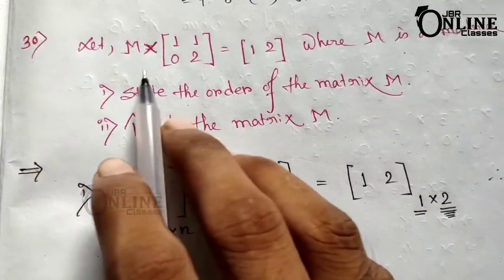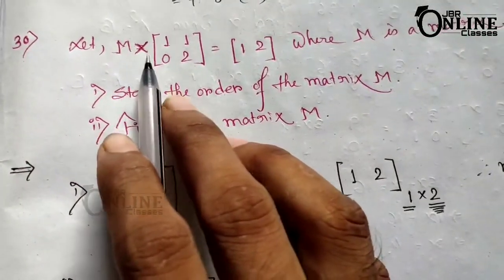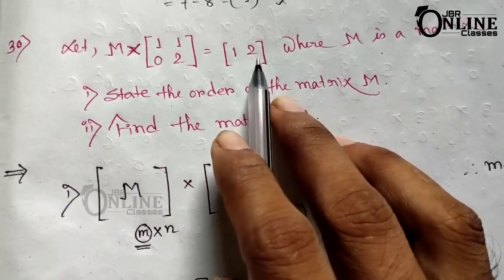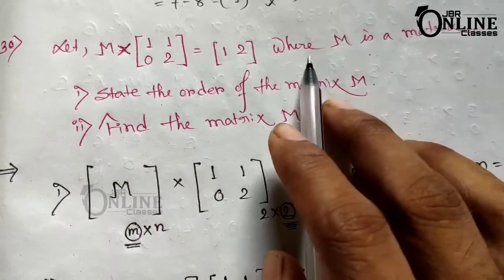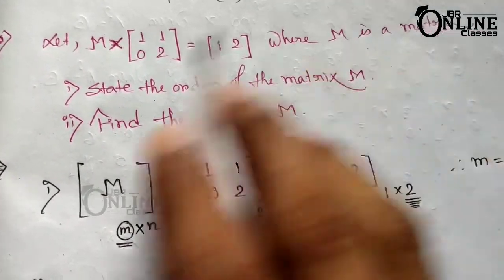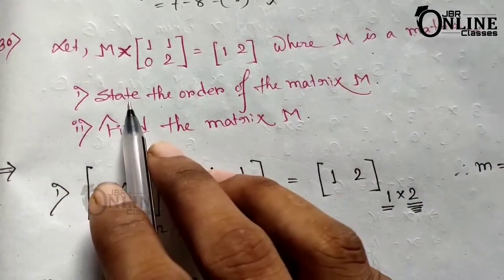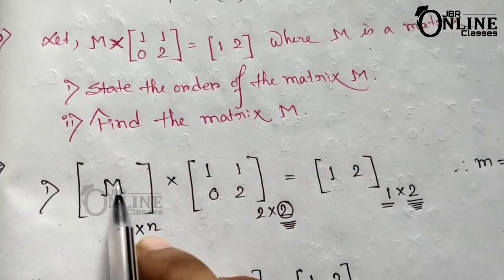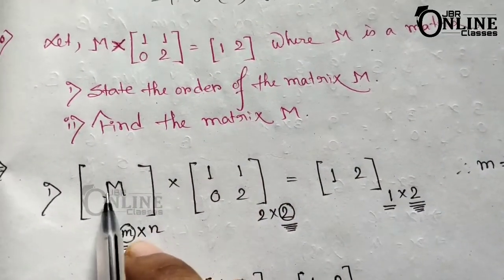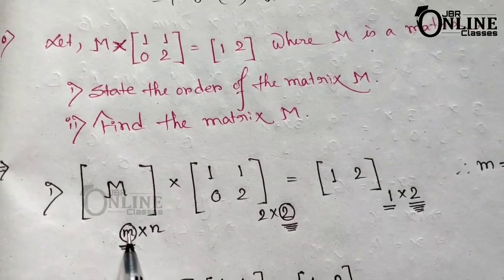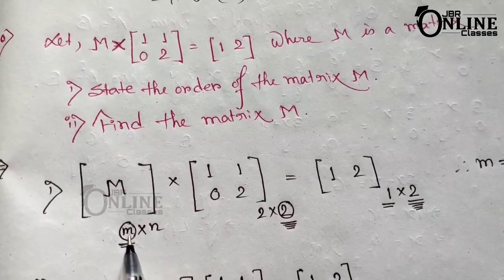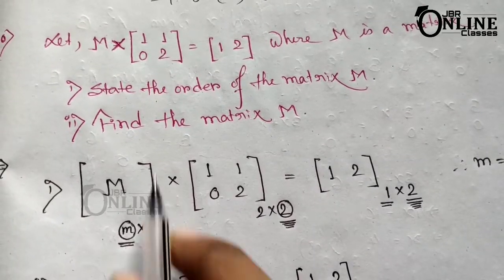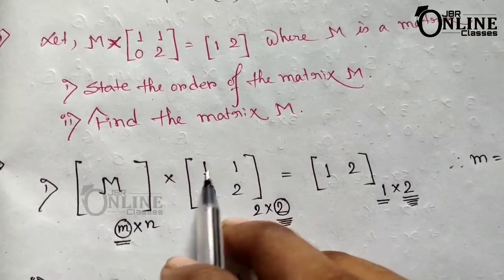Sum number 30: let M times [1, 1; 0, 2] equal [1, 2], where [1, 2] is a row matrix. Part one asks for the order of matrix M. If M is an m-by-n matrix, we denote rows as m and columns as n.